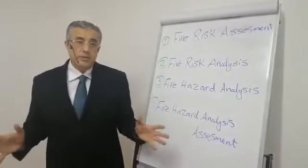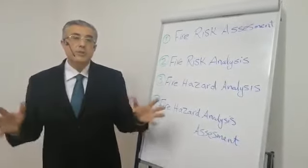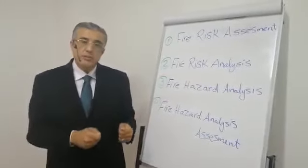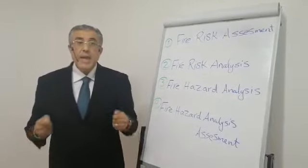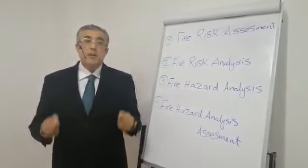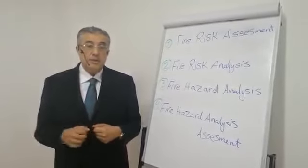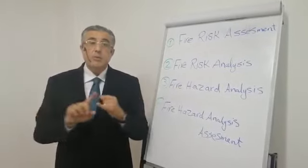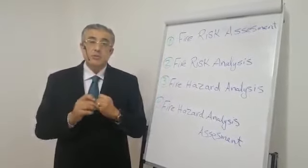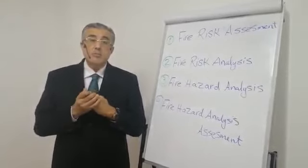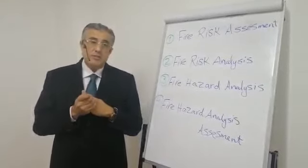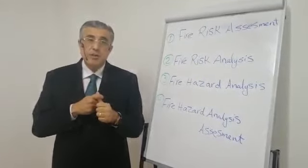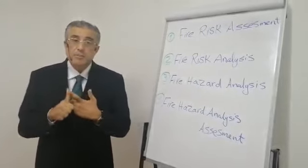Before we start, we have to ask ourselves a very important question. For any successful organization eager to identify and achieve smart objectives, how many types of risk management must this organization apply? The answer is six types of risk management: number one, quality risk management; number two, environmental risk management; number three, operational risk management; number four, health risk management; number five, natural risk management; number six, fire risk management.